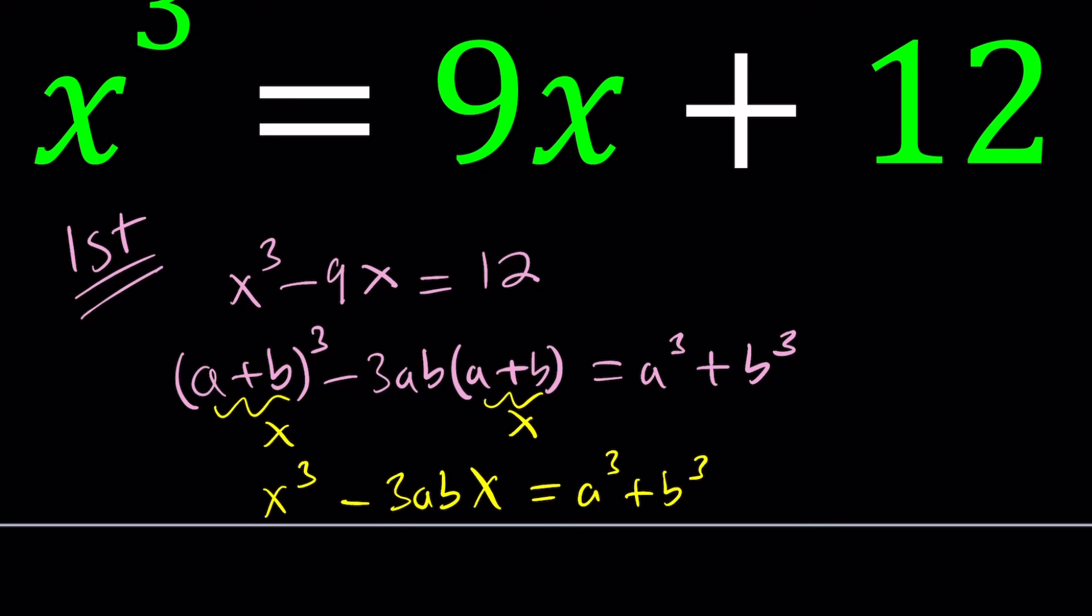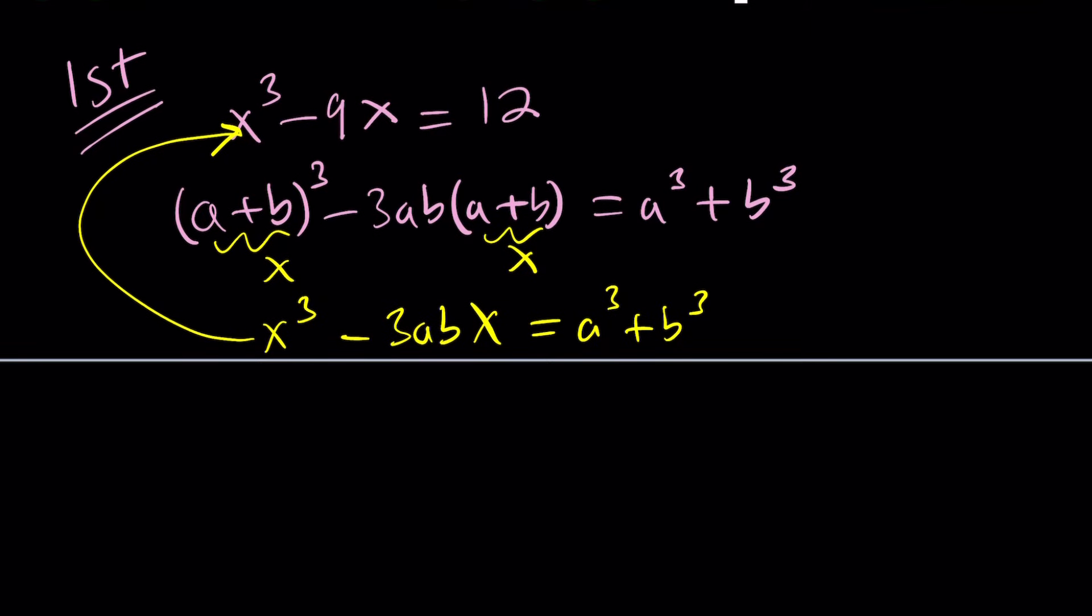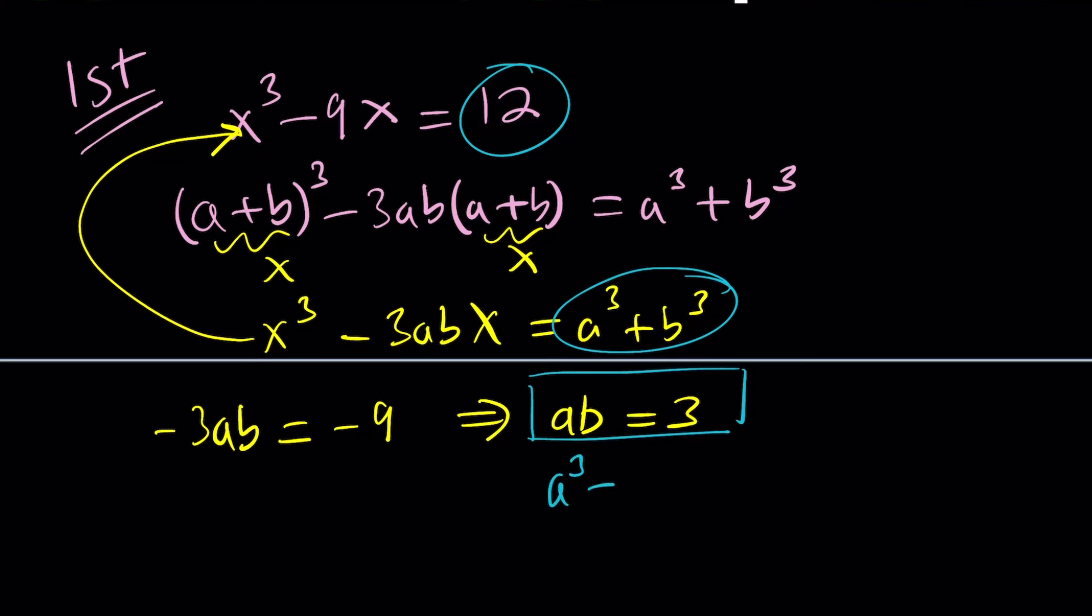Let's compare this equation to this one. We notice that the coefficient of x is -9 and -3ab. So -3ab equals -9, which implies ab equals 3. That's the product we found. Now let's look at the constant. The constant is 12 here and a³ + b³ here. So a³ + b³ is supposed to be 12. The question then becomes, can we find two numbers that satisfy this system? And the answer is yes.